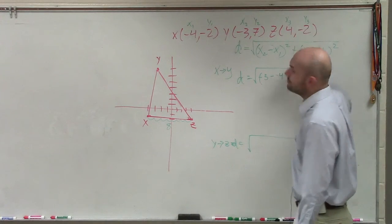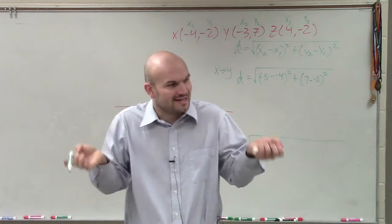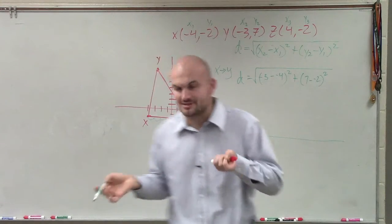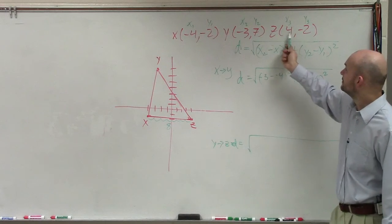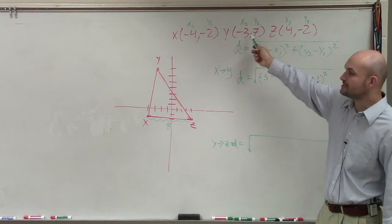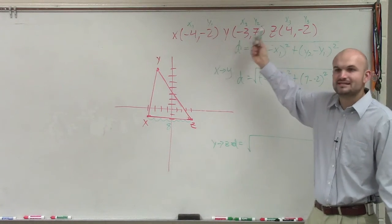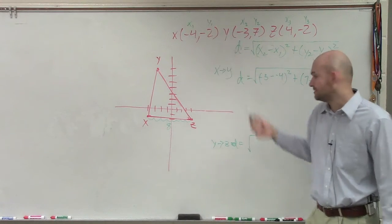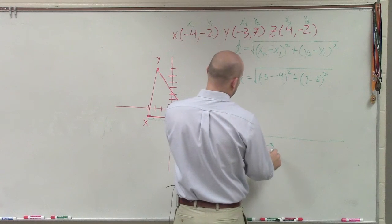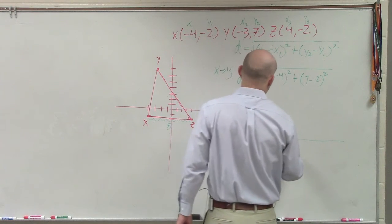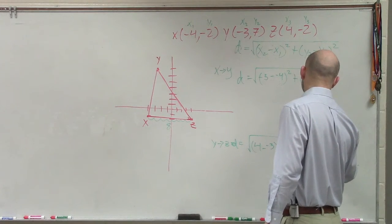But remember, when you're finding the distance, all you're doing is finding the difference between the two x coordinates. So in this case, I want to find y to z. I just need to find the difference between these two. So I'm just going to do x3 minus x2. It's the same thing as x2 minus x1. So therefore, I'll have 4 minus negative 3 squared, plus negative 2 minus 7 squared.